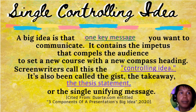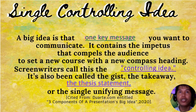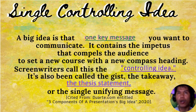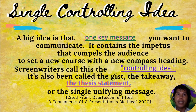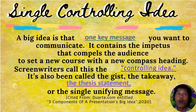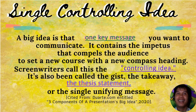Whatever the reason, far more often the exact opposite tends to occur — the points being made get buried or confused by competing information, and the complexity or depth of the message is lost to the reader as they struggle to identify the intended core message. This is why it is always best to limit each paragraph to one controlling idea — the big idea you want to communicate. Screenwriters call this the controlling idea; it has also been called the gist, the takeaway, the thesis statement, or the single unifying message.